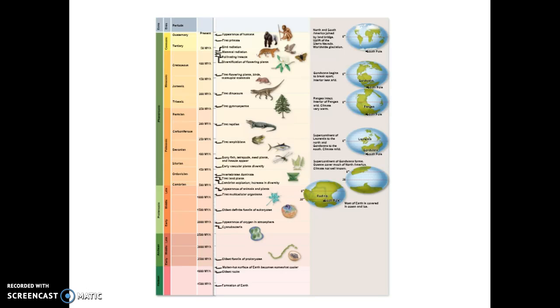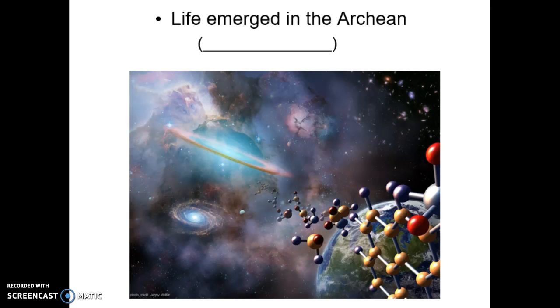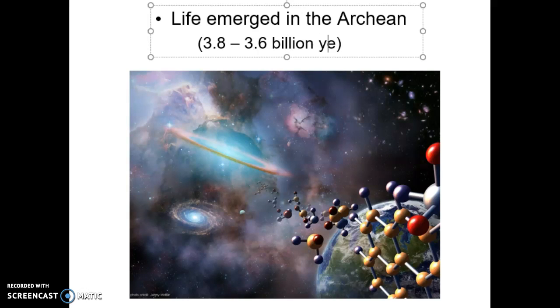So when life emerged, it emerged during what we call the Archean. This is not Archaea in regards to Protists. This is an eon of time on the Earth. And this is estimated to be about 3.8 to 3.6 billion years ago when it's estimated life first showed up on Earth. We may find evidence to say it's older, but the current scientific evidence indicates 3.8 to about 3.6 billion years ago for life to originate on this planet.